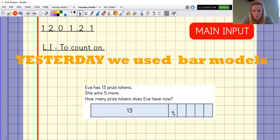13, 14, 15, 16, 17, 18. 13 plus five is 18. Let's see the different ways we might be doing it today.